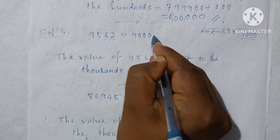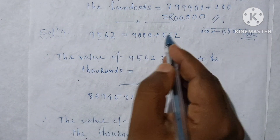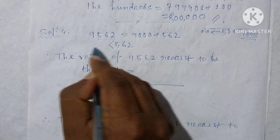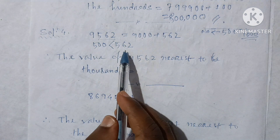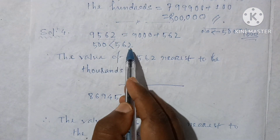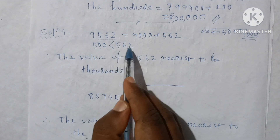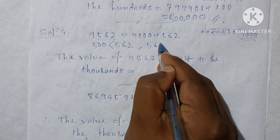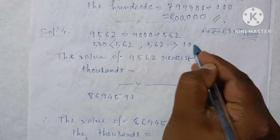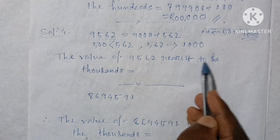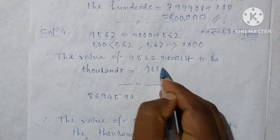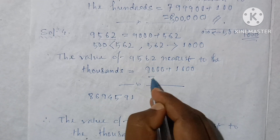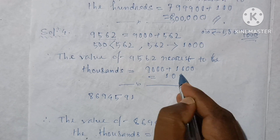9,562 is written as 9000 plus 562. Since 562 is greater than 500, it rounds up to 1000. So 9000 plus 1000 equals 10,000. The value of 9,562 nearest to the thousand is 10,000.